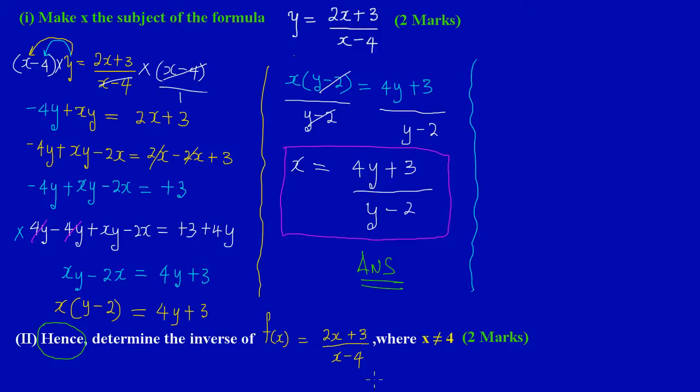My friends, it doesn't make sense. Now let's just quickly get into this. Here they are saying hence, and this word hence means that they are restricting us. It means that we have to use the result from the previous answer, meaning the answer that we got in part one: x = (4y+3)/(y-2). We're going to have to use that answer to determine the inverse of the function f(x) = (2x+3)/(x-4).